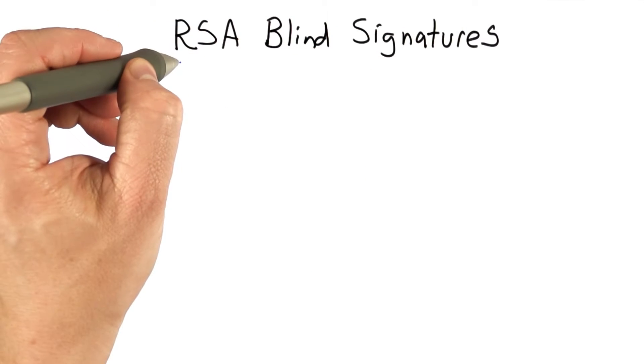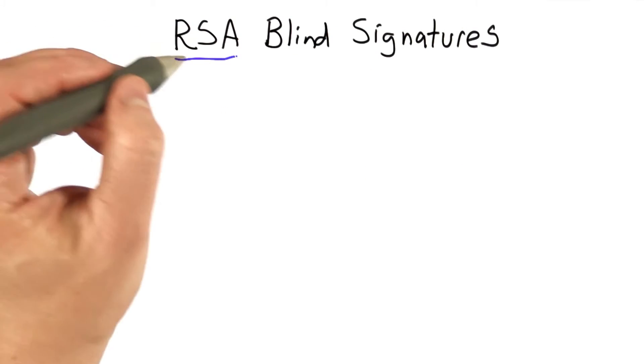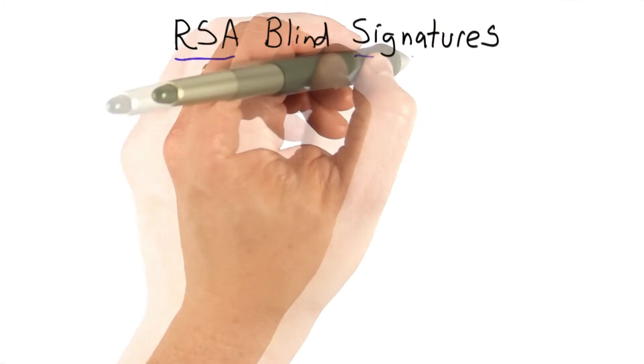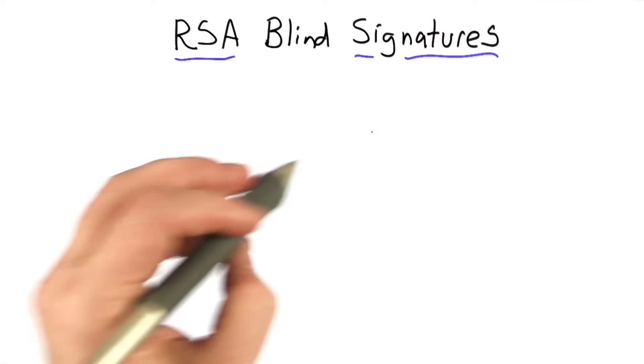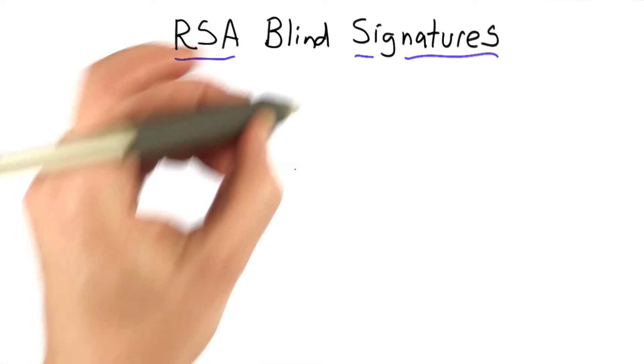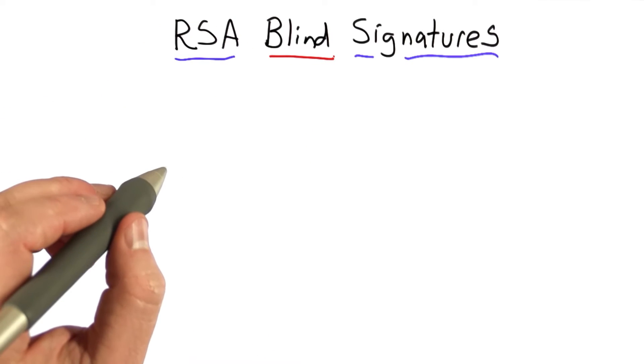The scheme we'll look at for doing this is built on RSA, and it uses RSA signatures as we've seen in Unit 4, but this time, instead of using them normally, we'll use them in a way that blinds the message from the signer.